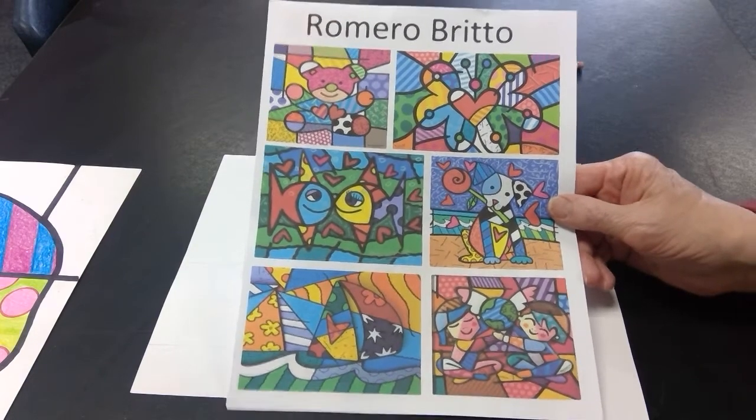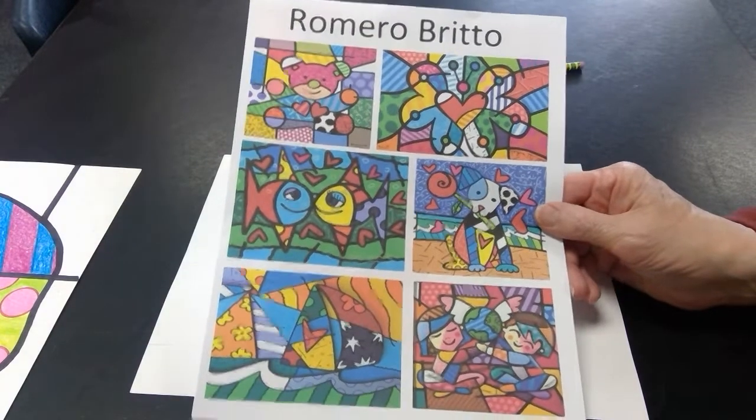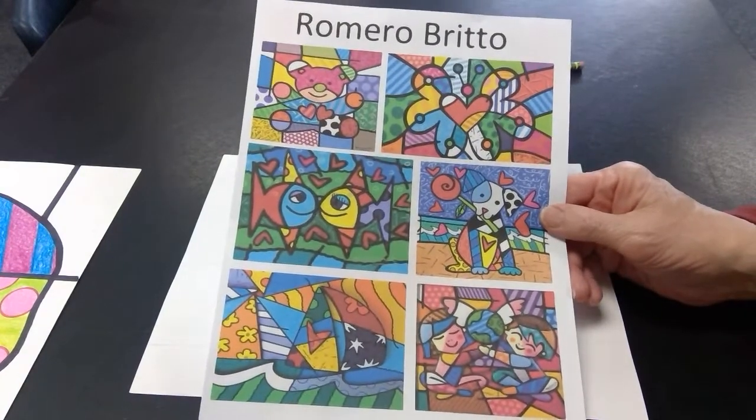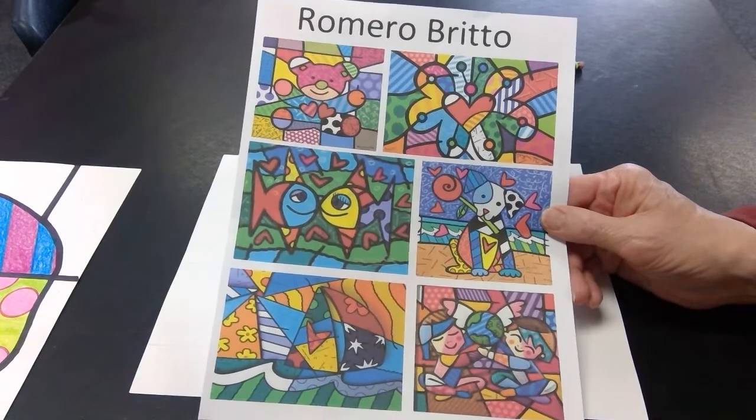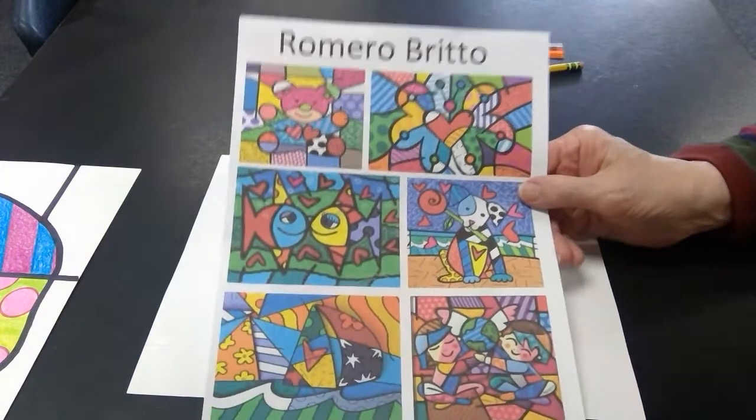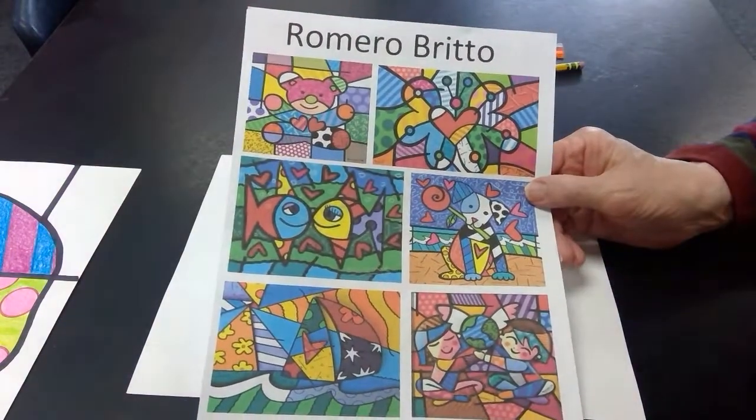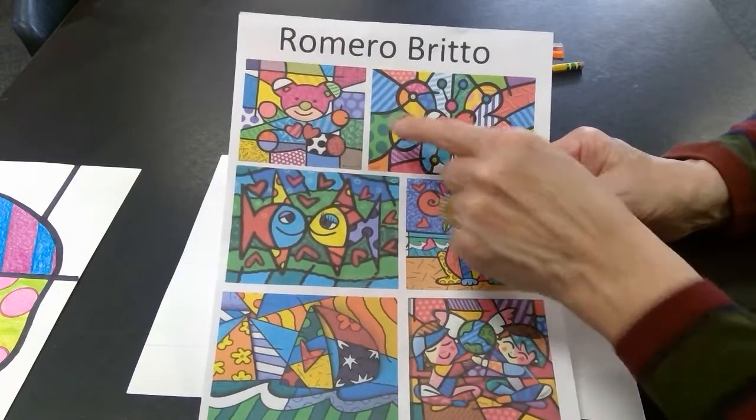Today we're going to be learning about Romero Britto. He's a Brazilian artist that has moved to the United States, to Miami, and he paints very bold pictures. It's often called pop art, where they use this kind of artwork in advertising and things like that. But I really like his paintings because they're so bright and cheerful.